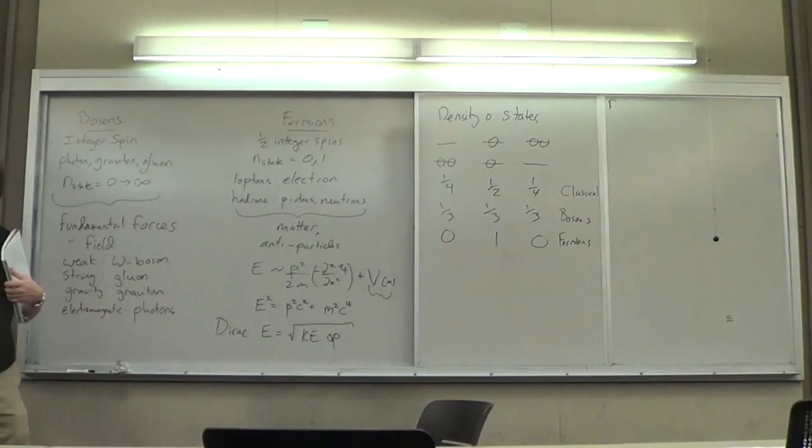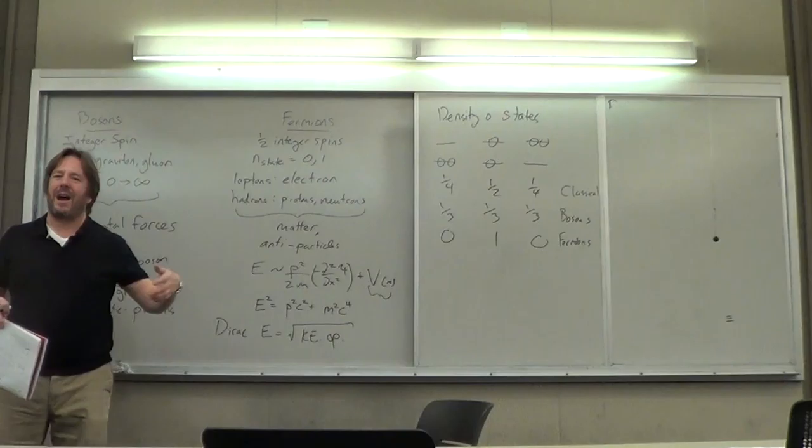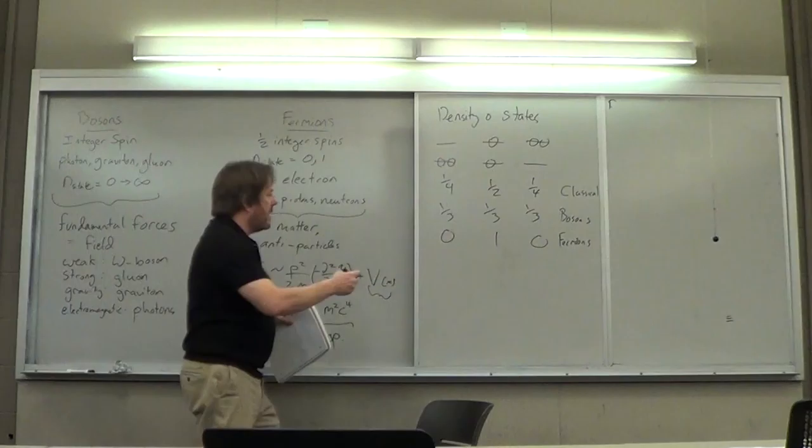Bosons are democratic — any number can occupy the same state. Fermions, on the other hand, say 'you're different, stay away from me' — only when two particles are in different states is that allowed. For electrons, that's spin up and spin down. Spin is not predicted by the Schrödinger equation — when you plug in a hydrogen atom, there's no spin. The Dirac equation predicts spin as part of keeping angular momentum constant.